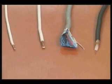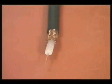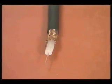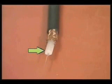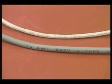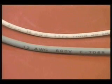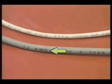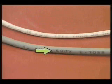Coaxial cable is shielded cable that carries low voltage signals. In addition to a jacket and braided shield, coaxial cable has a dielectric and insulation covering the conductor. The amount of current a conductor can carry is determined by its gauge or size. The wire gauge and voltage must be marked on the insulation. Voltage ratings are determined by the amount and type of insulation.